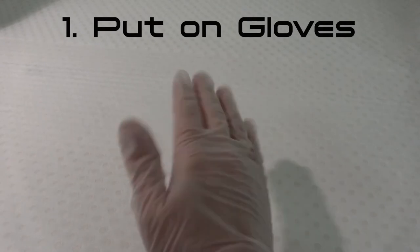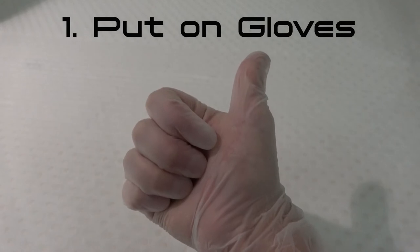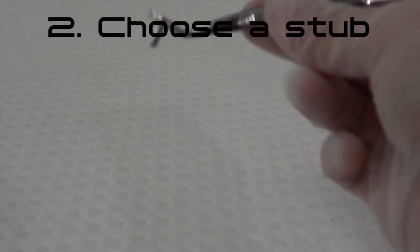Preparation. Step 1: Put on gloves. Always keep fingerprints off anything that will go into the SEM chamber such as stubs and samples.